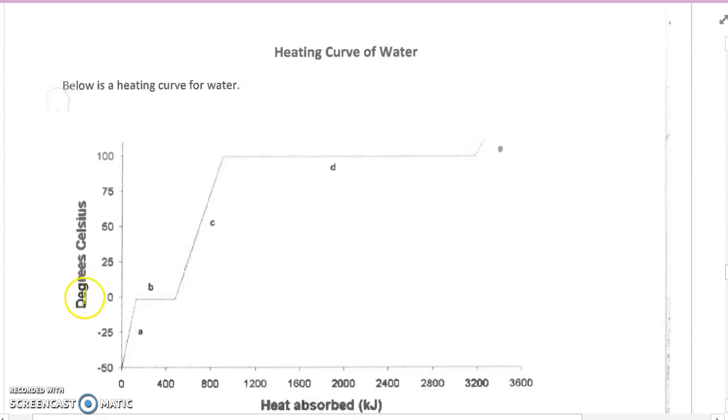You'll notice that the y-axis is degrees Celsius, so this is a way of measuring the temperature of our substance. The x-axis you'll often see is one of two ways. It'll either be heat absorbed, kilojoules in this case, or it's time.